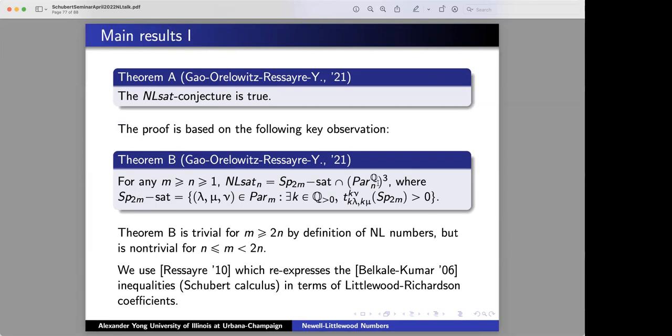So how do we prove theorem B? Really, let me talk about Belkale-Kumar inequalities right now. Belkale and Kumar think about these sorts of questions of knowing about tensor, the saturated tensor cones, things like this thing over here in general, without any constraint, complex reductive groups. And what they do is they give an answer, a very beautiful answer in terms of Schubert calculus.